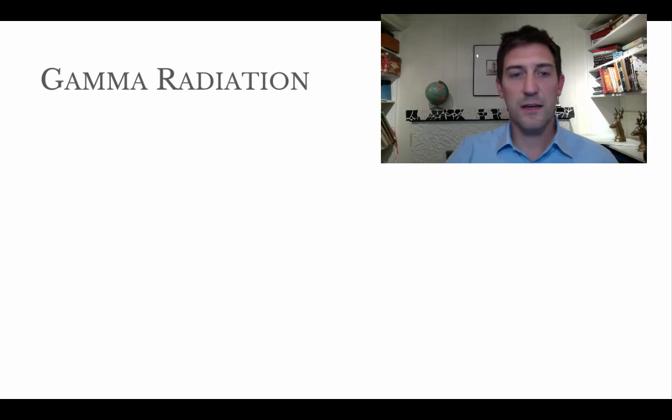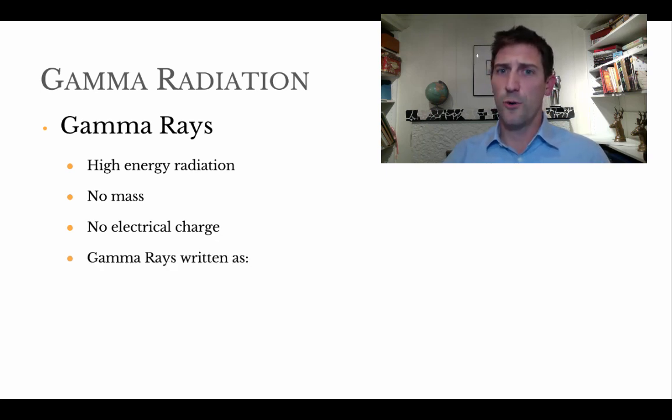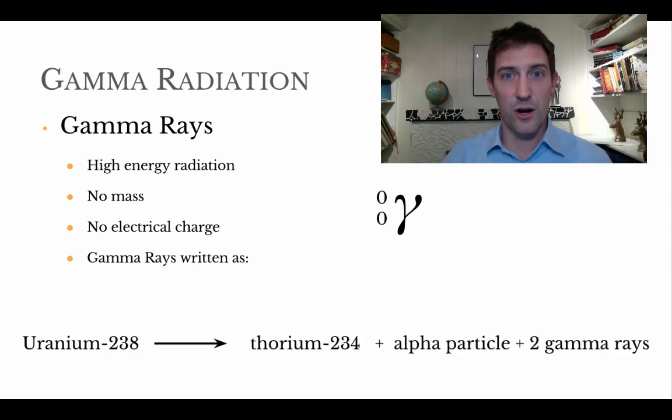The last and not least is gamma radiation. Now gamma radiation is by far the most harmful because it is super high energy radiation. It has no mass and it has no charge. The other ones at least had a mass and charge. So this is just energy. And we write it with the Greek gamma and 0, 0. Zero because it has no mass and below that because it has no charge.